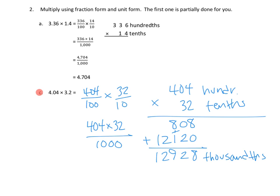So how many thousandths? The 12 thousandths would come out and make 12 wholes, and 928 more thousandths. So that's 12.928. I can estimate this quickly — this number here is about 4, and this number is a little more than 3. So I'd guess my product should be a little more than 4 times 3, which is a little more than 12. And look at my answer — a little more than 12: 12.928. My estimate tells me I might be on the right track.